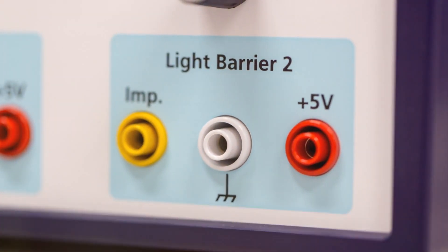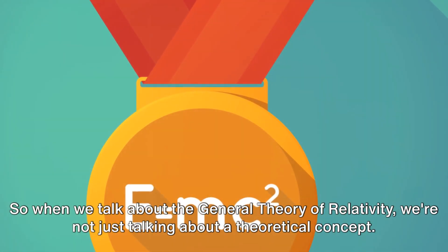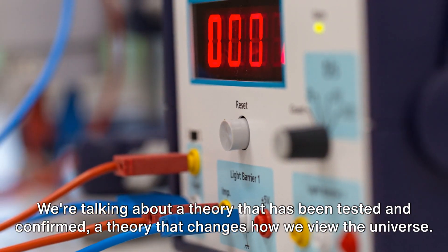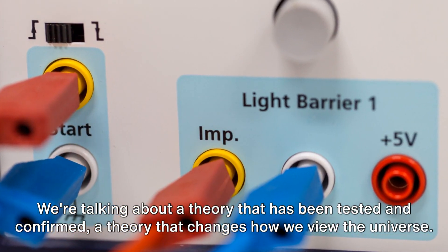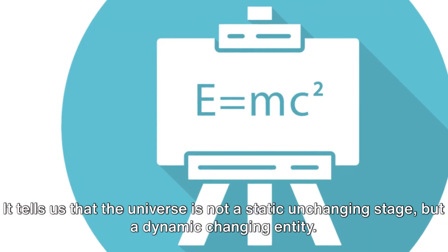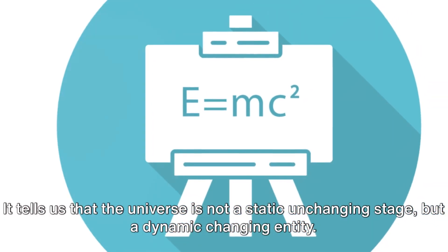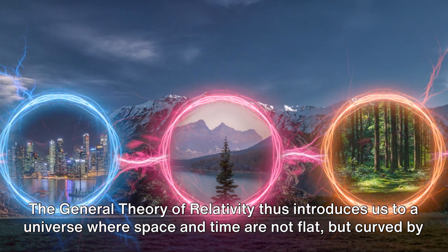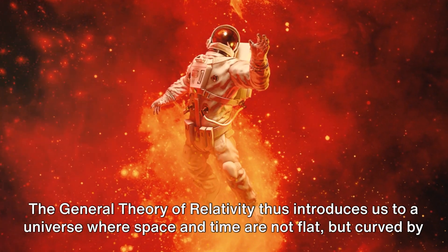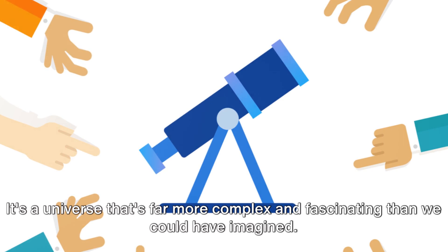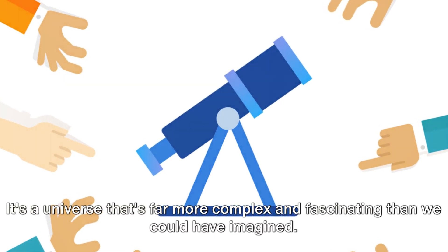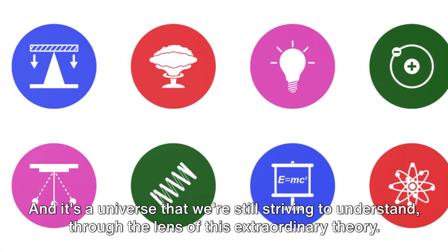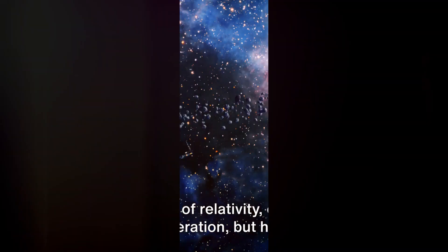So, when we talk about the General Theory of Relativity, we're not just talking about a theoretical concept. We're talking about a theory that has been tested and confirmed, a theory that changes how we view the universe. It tells us that the universe is not a static, unchanging stage, but a dynamic, changing entity. The General Theory of Relativity thus introduces us to a universe where space and time are not flat, but curved by mass and energy. It's a universe that's far more complex and fascinating than we could have imagined. And it's a universe that we're still striving to understand, through the lens of this extraordinary theory.